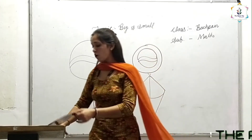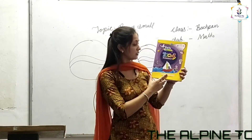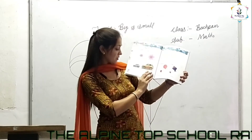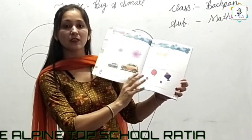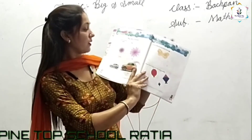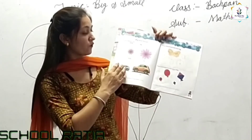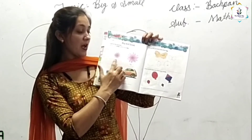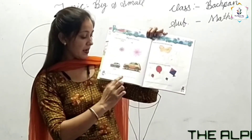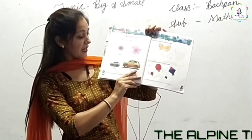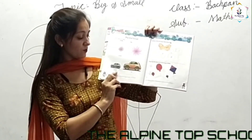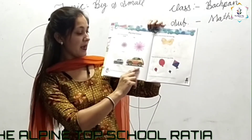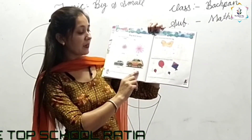Now open your book to page number 8. Tell me which kite is big and which is small. Small kite, big kite. This is the small kite and this is the big kite.